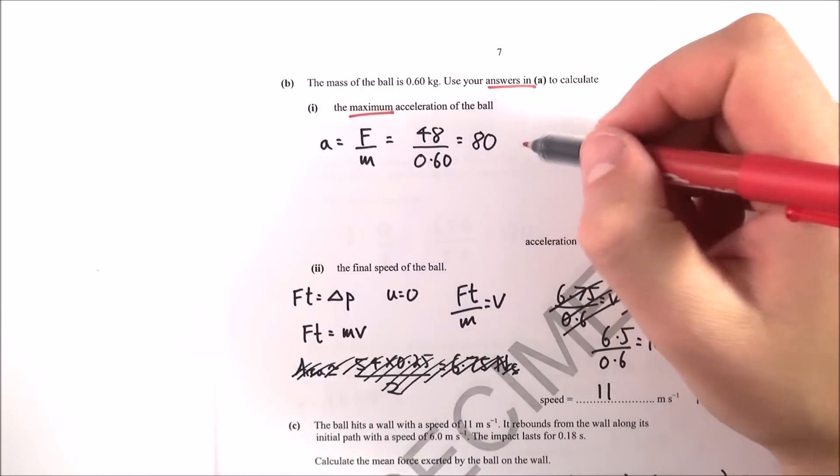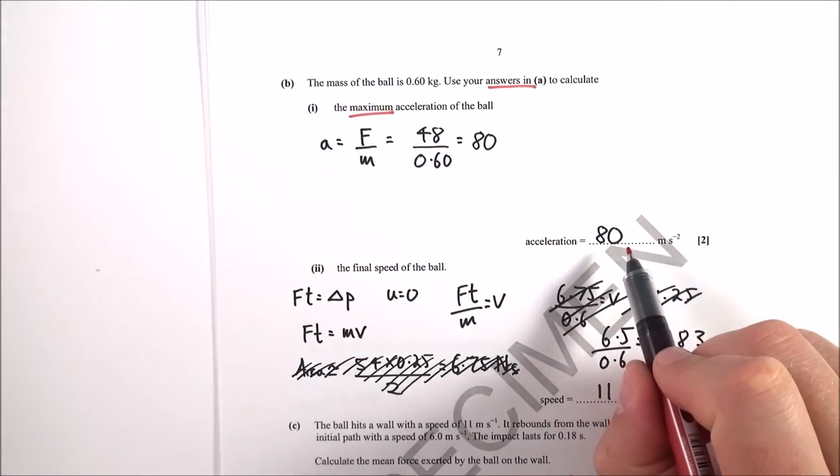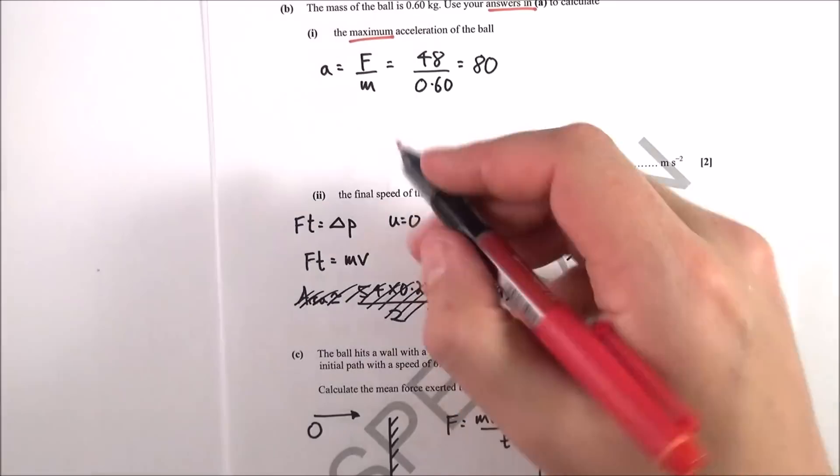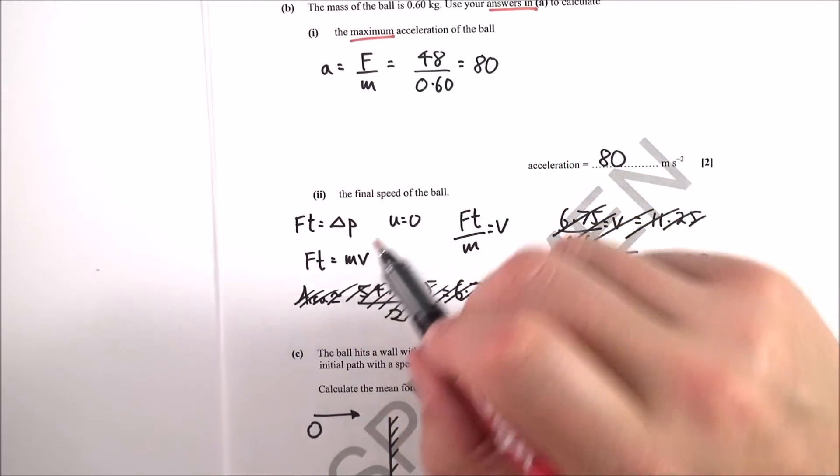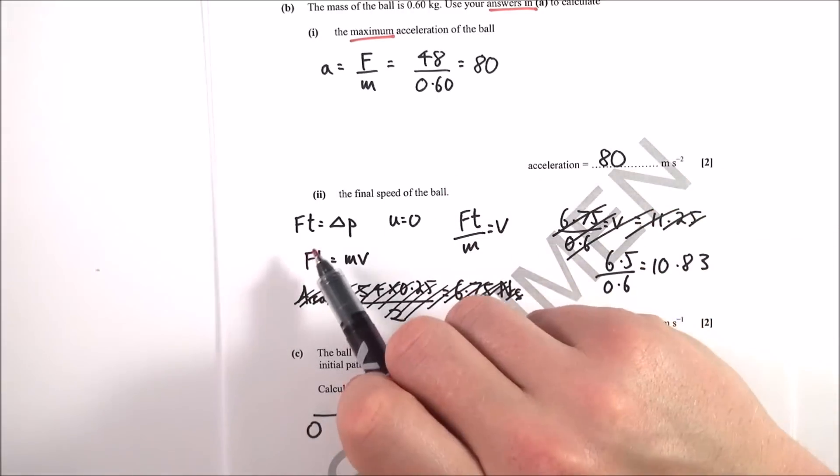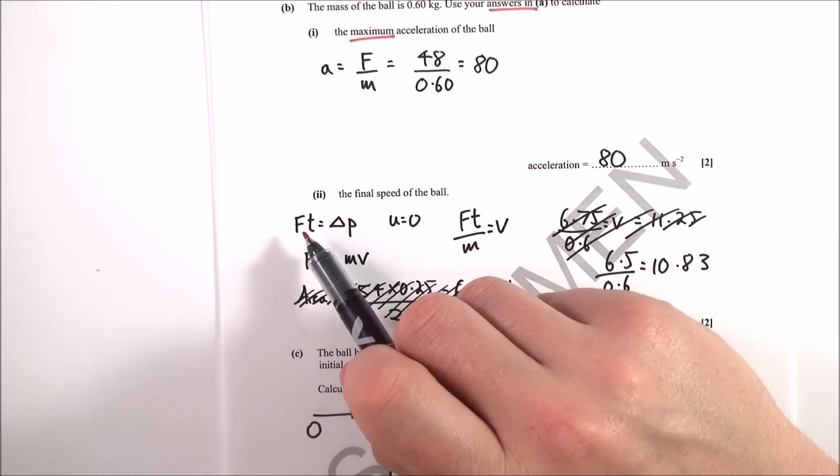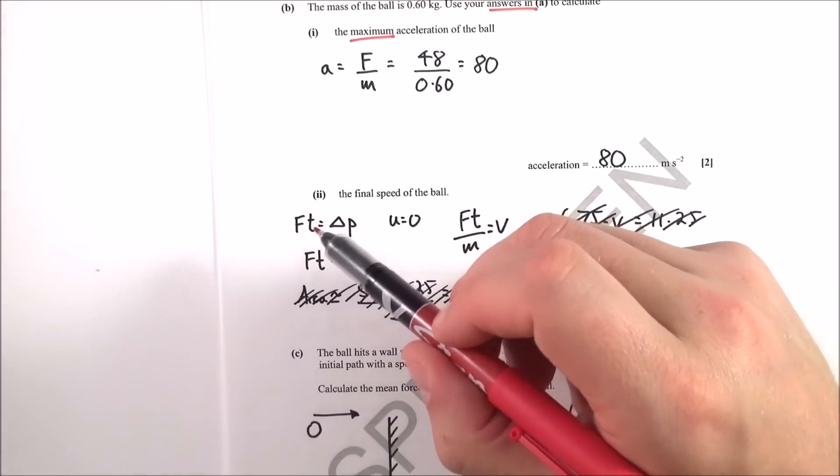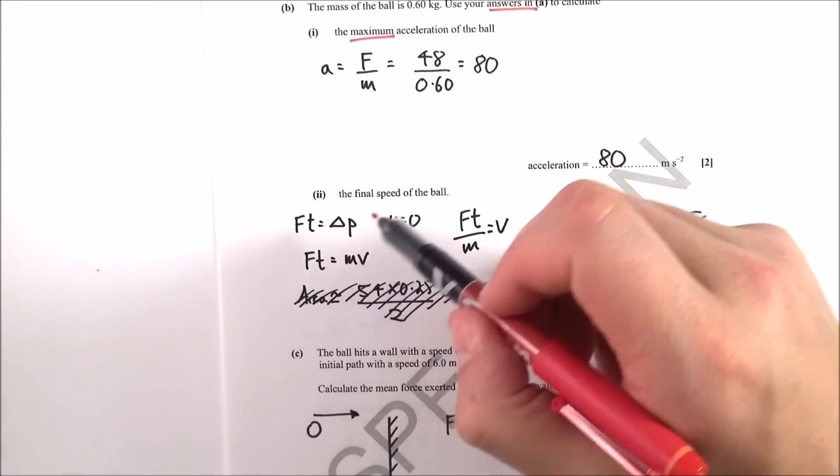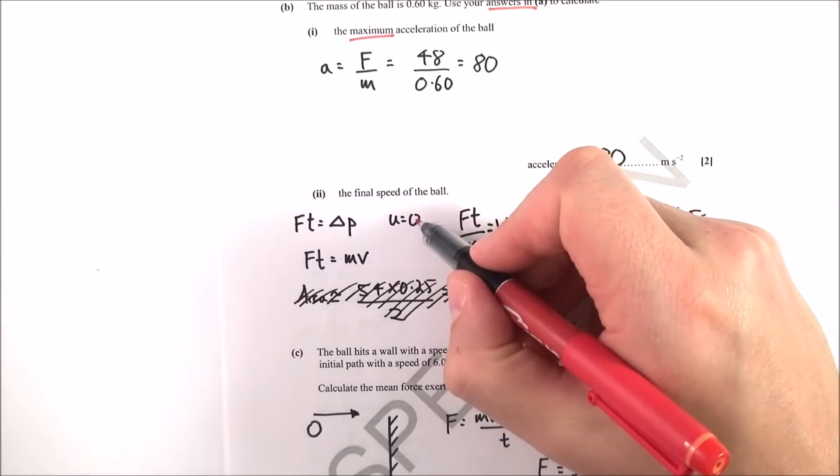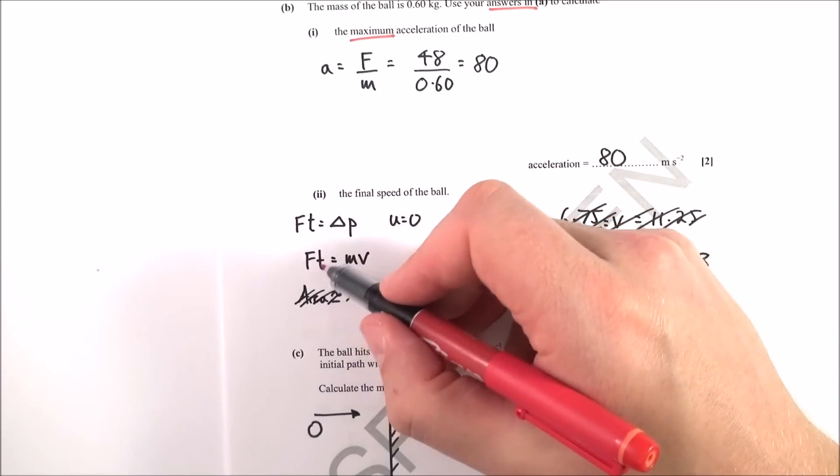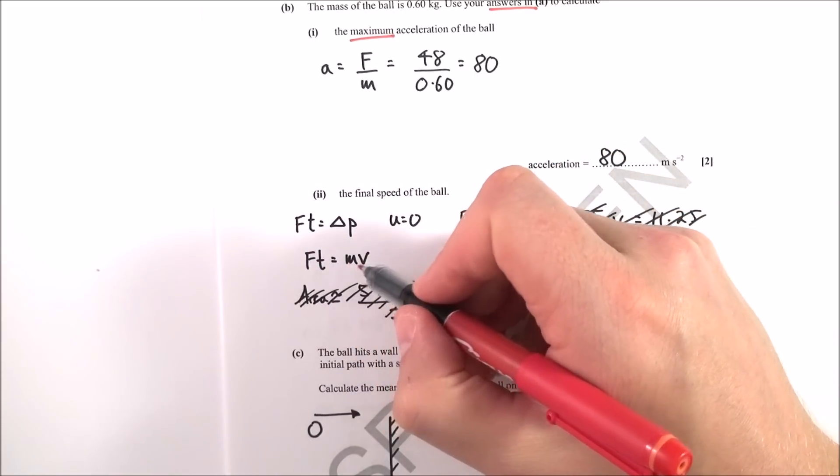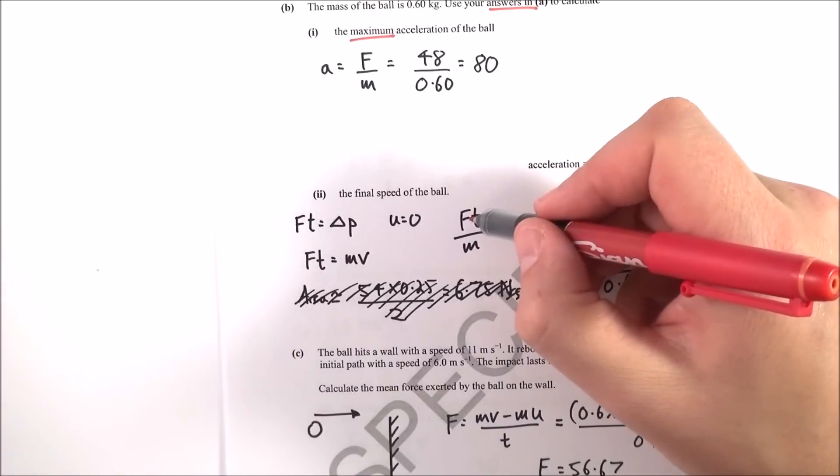The second part wants you to find the final speed of the ball. We know that impulse, which is force times time, equals the change in momentum. Remember, Newton's second law states that force is proportional to the rate of change of momentum. We know u equals zero, so impulse equals m times v. Therefore, impulse Ft over m equals the final velocity v.